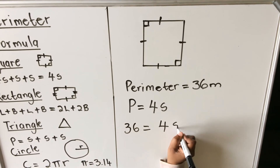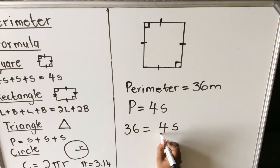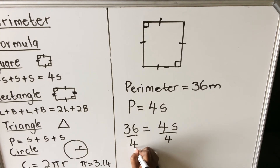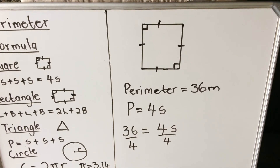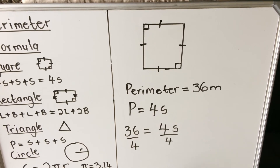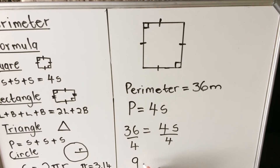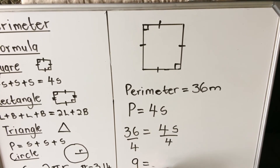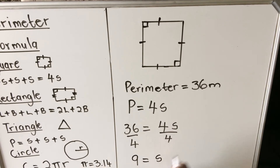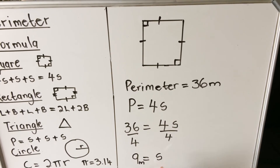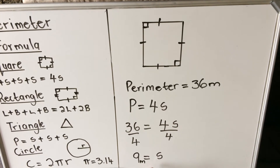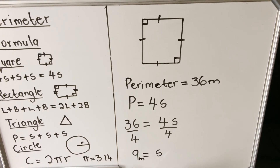We divide both sides by four: 36 divided by 4 equals the side length, which gives us 9 meters. So each side of the square is 9 meters.